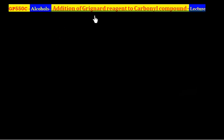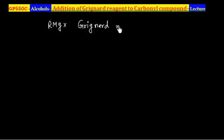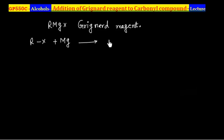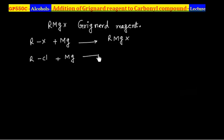Addition of Grignard reagent to carbonyl compounds. RMgX is known as Grignard reagent. It can be prepared by the reaction of alkyl halide with magnesium. For example, if alkyl halide is RCl and it is treated with magnesium, we will have Grignard reagent RMgCl.